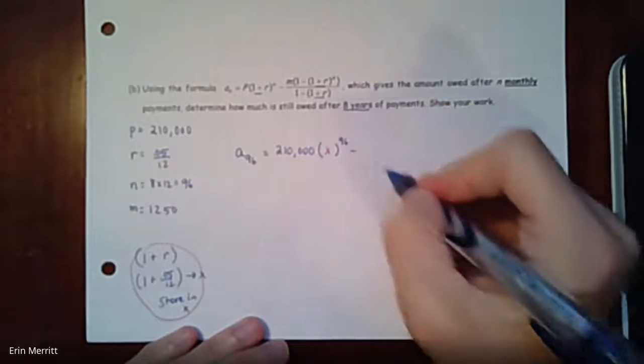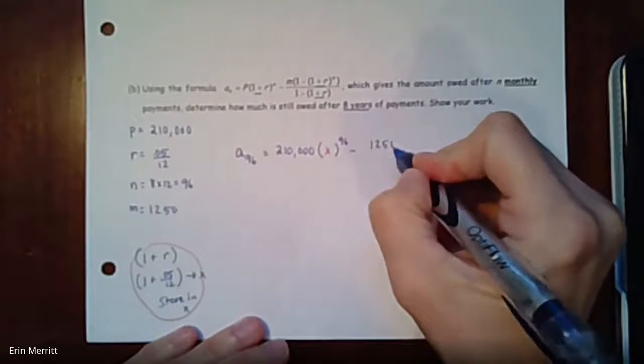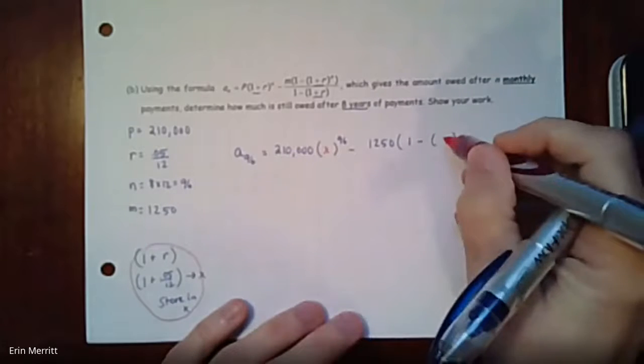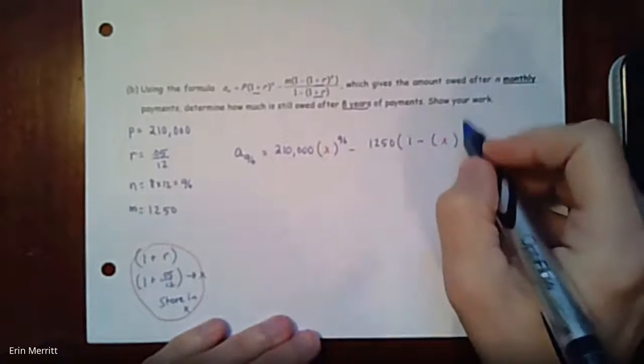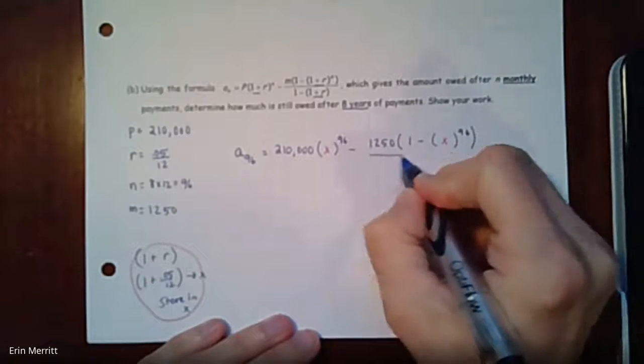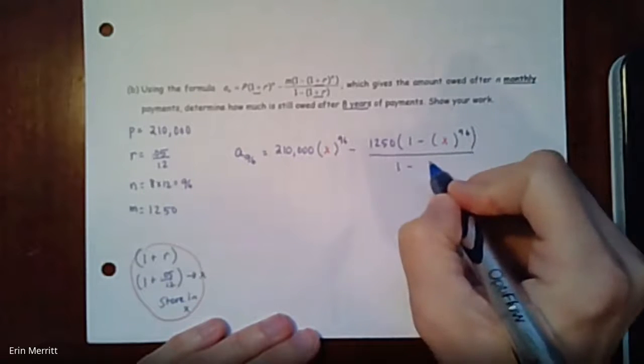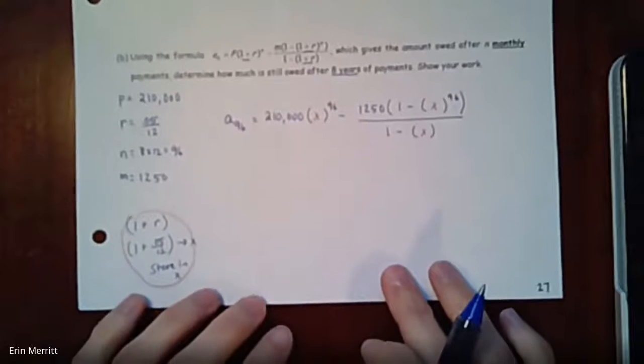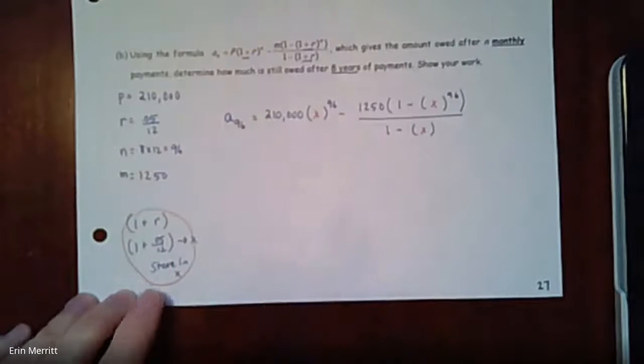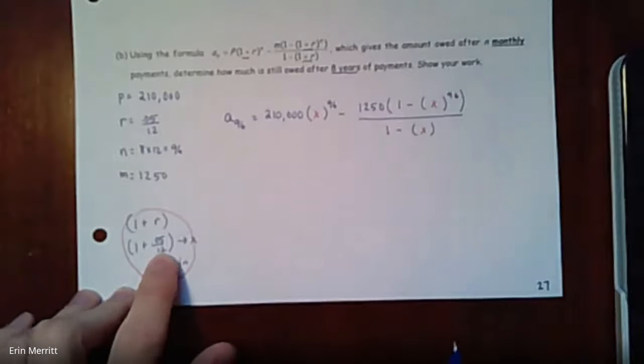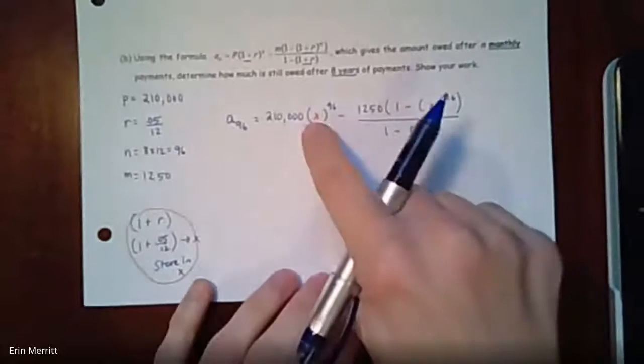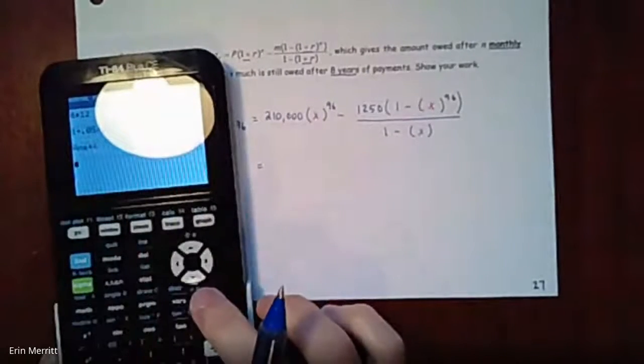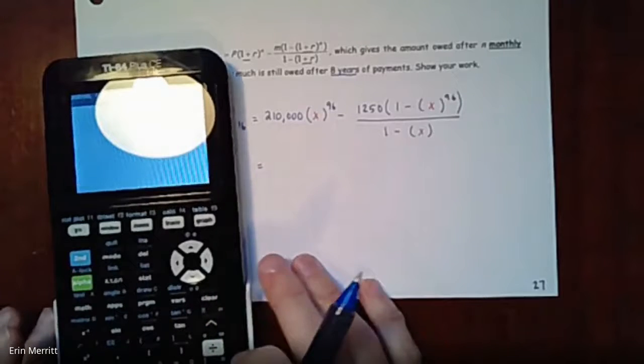1 + 0.05 over 12 is kind of nasty, so I'm going to store that in x on my calculator. That means into my work now I'm going to put an x right here. I'll use a red x for that little piece of it, and then I'm going to raise that to the 96th power, then minus 1250, and then 1 minus here's going to be that same thing - that red x there to the 96th power.